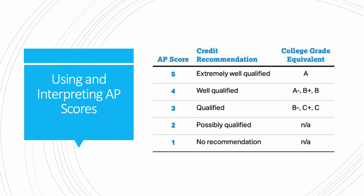AP scores range from 1 to 5, with 1 being the lowest and 5 the highest. A 5 is interpreted as a solid A — extremely well qualified. A 4 is well qualified, based on a range from A- to B depending on whether it's a high 4 or a low 4. A 3 is qualified, ranging from B- to C. A 2 is possibly qualified, and a 1 is not recommended.